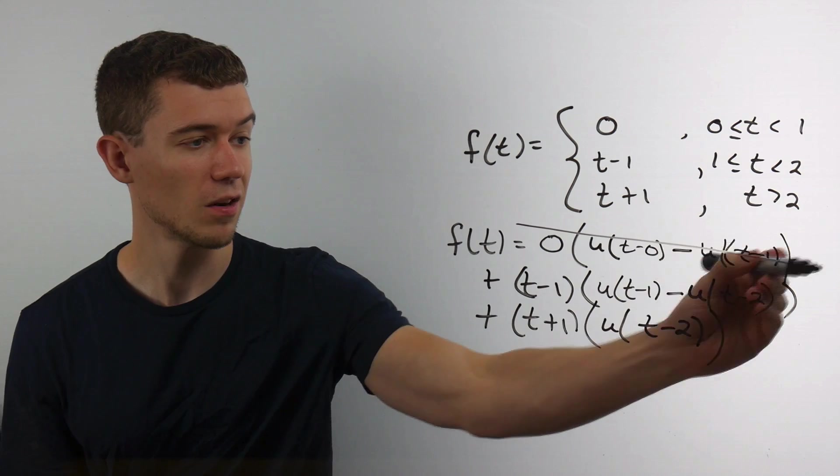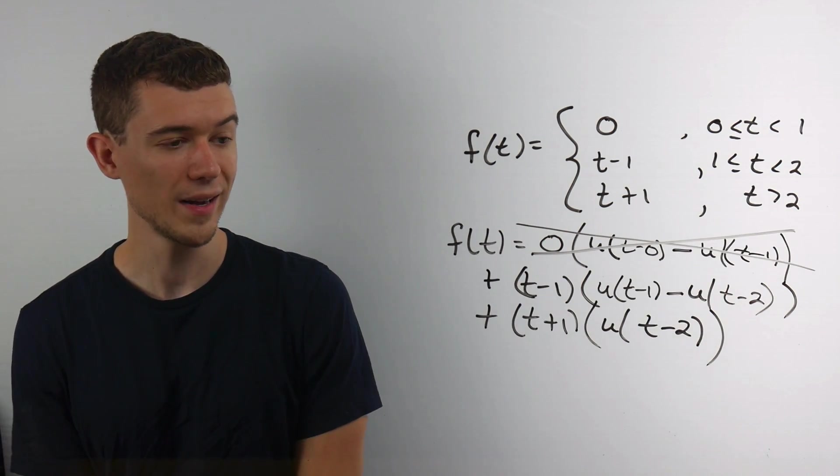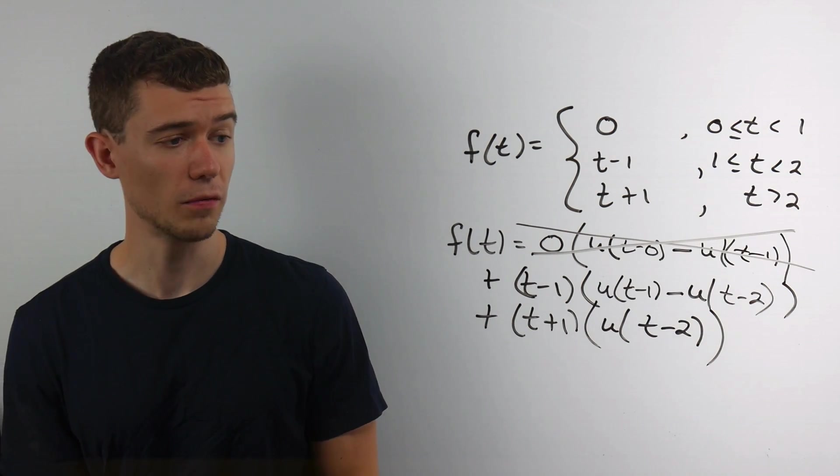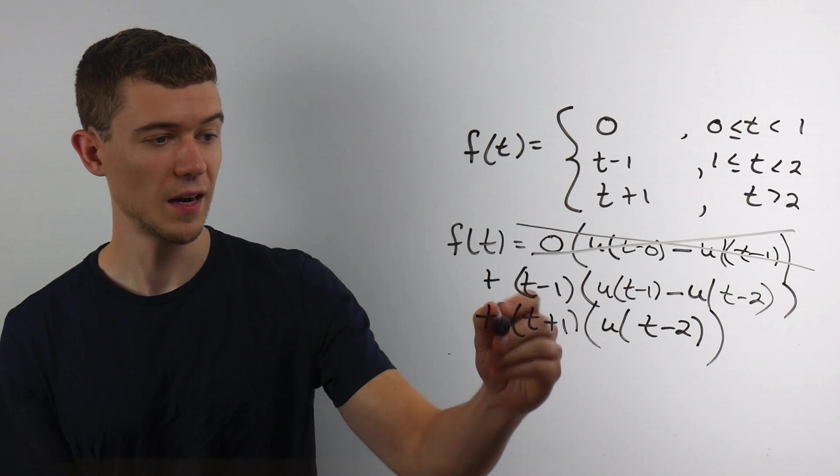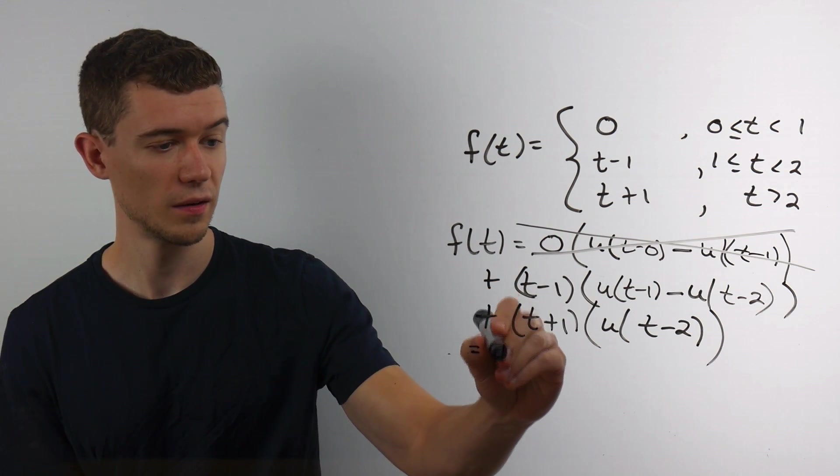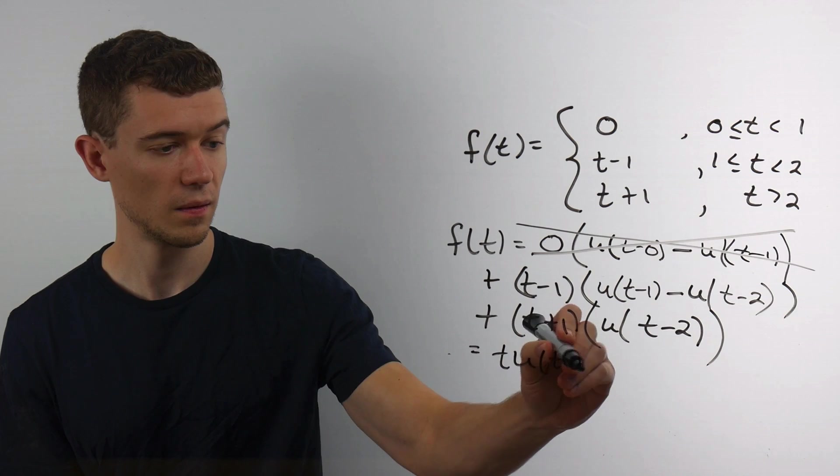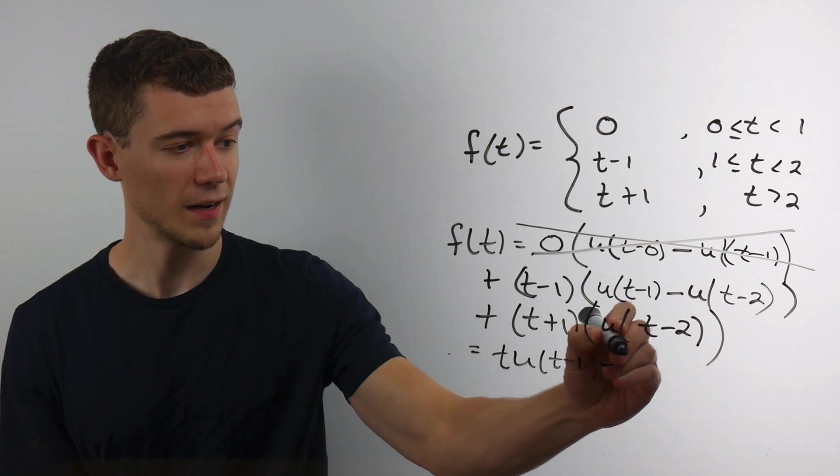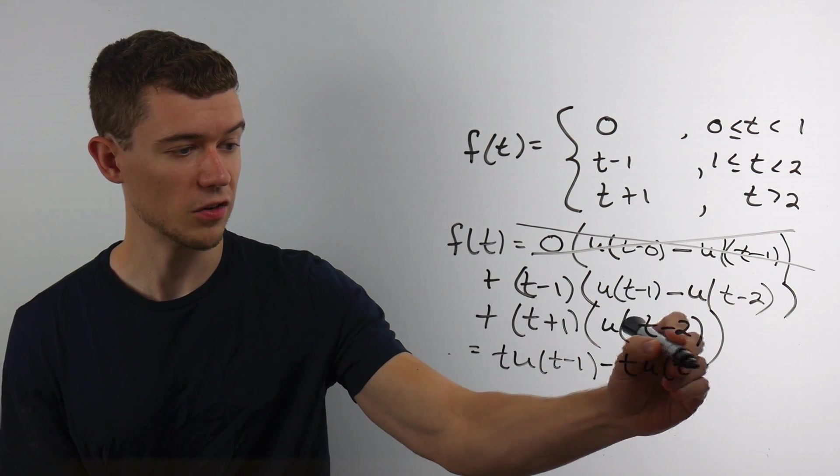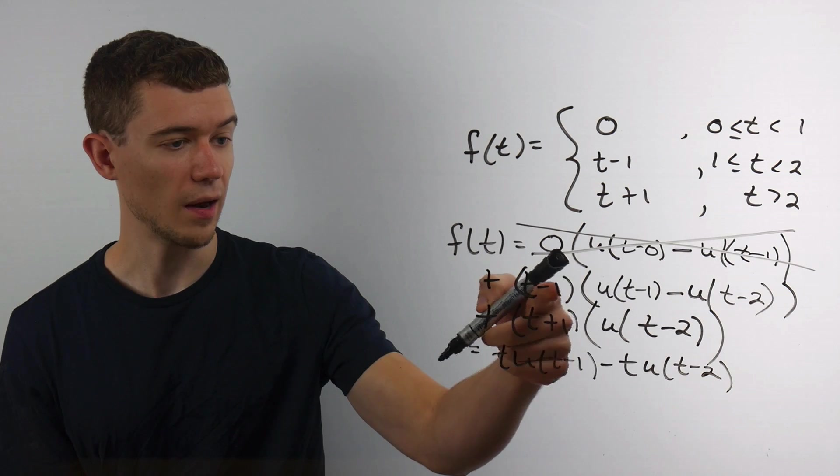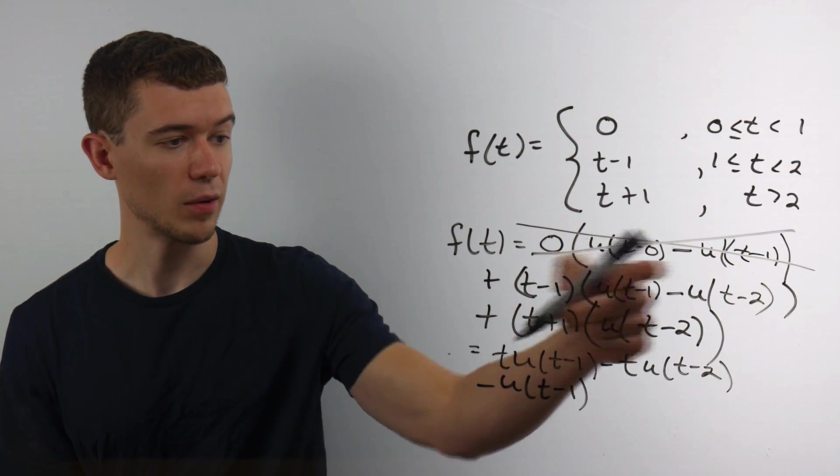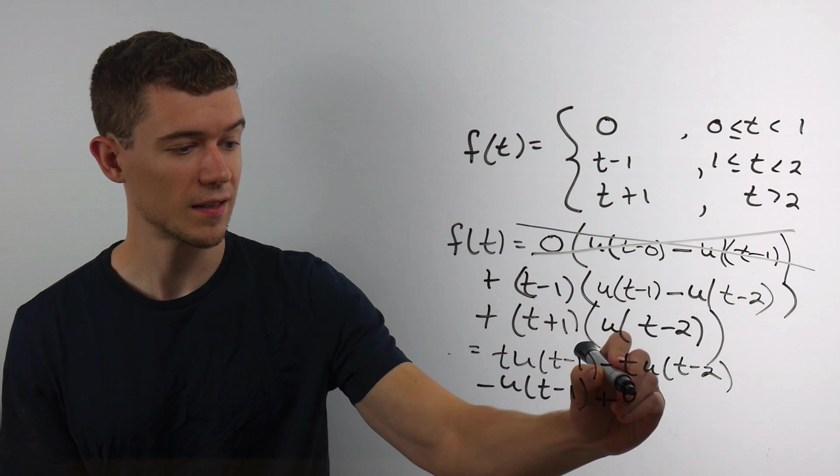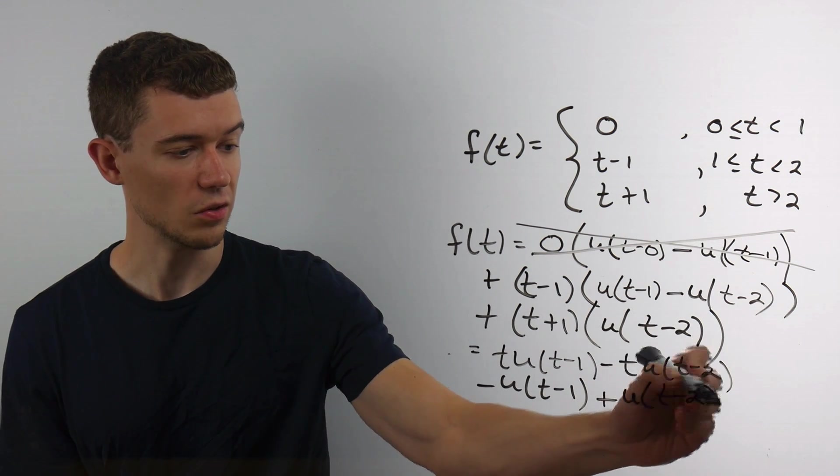0 times anything is 0. So this will all just go away. And then I could just distribute the rest. Think about how the distributive law works. I would have t times u of t minus 1. I would have minus t u of t minus 2. I would have minus u of t minus 1.